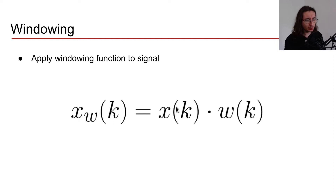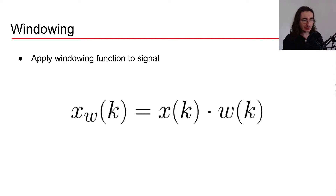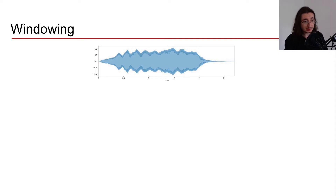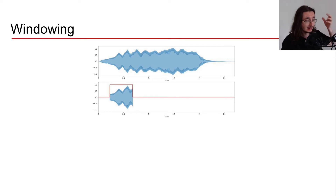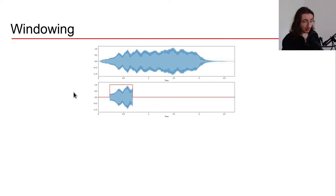Windowing means we take the original signal and multiply it by a window function sample by sample to obtain a windowed signal. As an example, we can apply a rectangle windowing function. The rectangle window has a rectangular shape — it is zero everywhere except in a segment where it equals one. If we multiply the signal by the rectangle window, we obtain the windowed signal shown here.